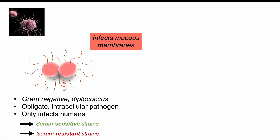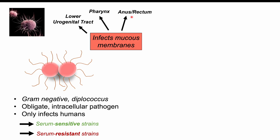When an individual is exposed to Neisseria gonorrhea organisms, if they come into contact with that person's mucous membranes, this can lead to an infection. Mucous membranes that can be invaded include the lower urogenital tract, which is the most common site affected. It can also infect the pharynx (the throat), the anus and rectum, and the conjunctiva of the eyes.